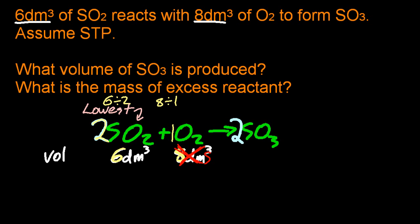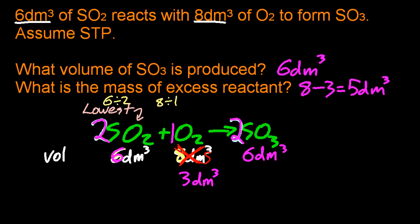Eight decimeters cubed, that's wrong. It's too much. It's excess. Now I know that two is to six as two is to six. So I've got six decimeters cubed of sulfur trioxide. My mass of excess reactant. If two is to six, then one is to three decimeters cubed. I actually put in eight decimeters cubed, but I only use three, five decimeters cubed excess.